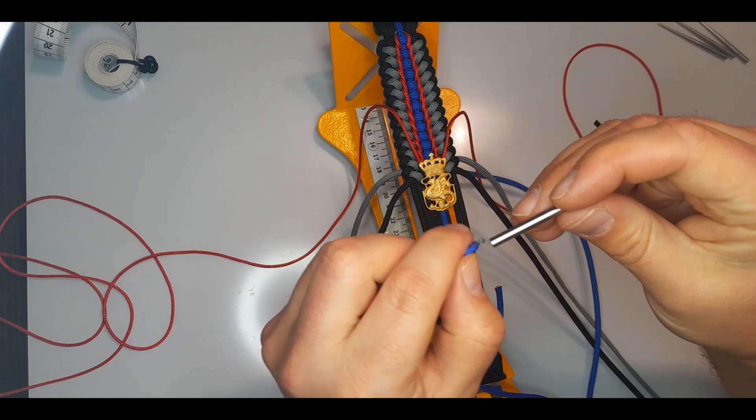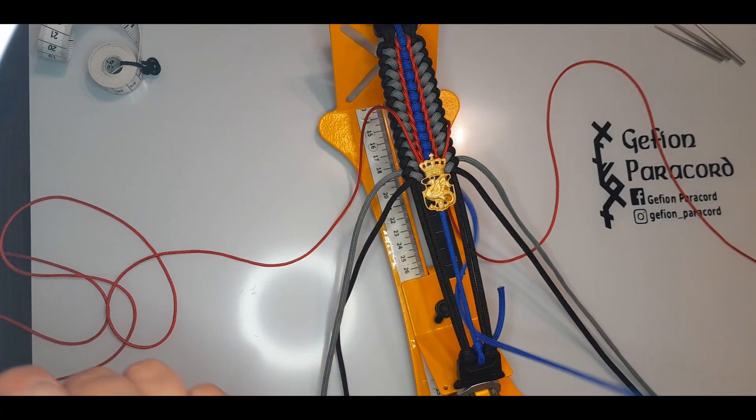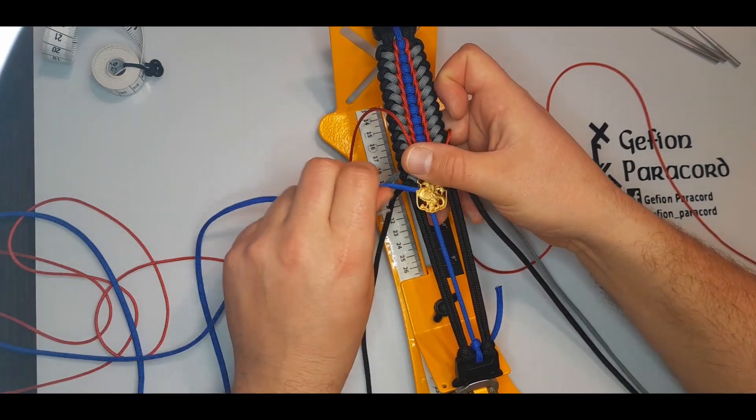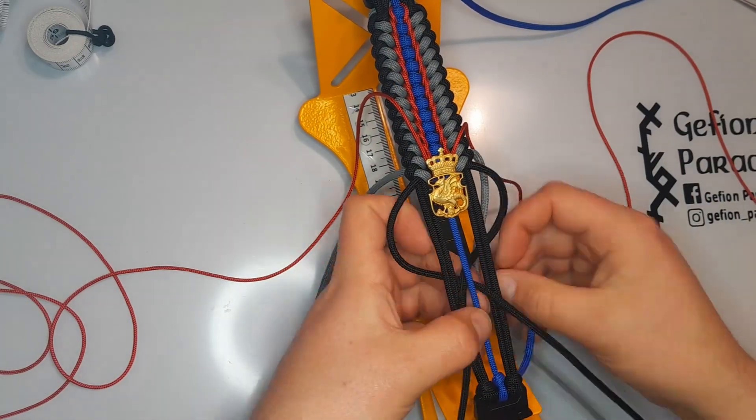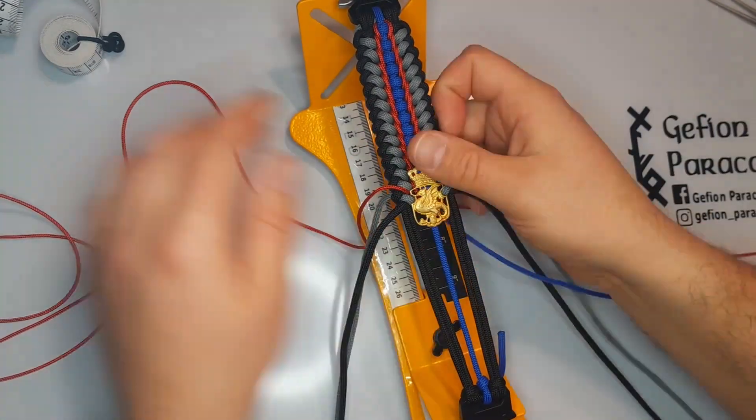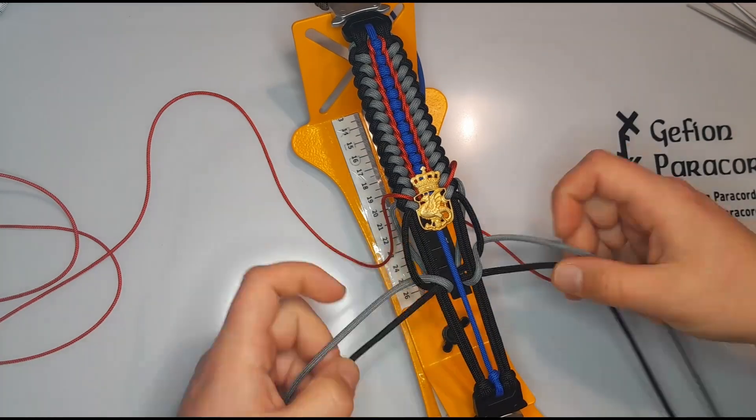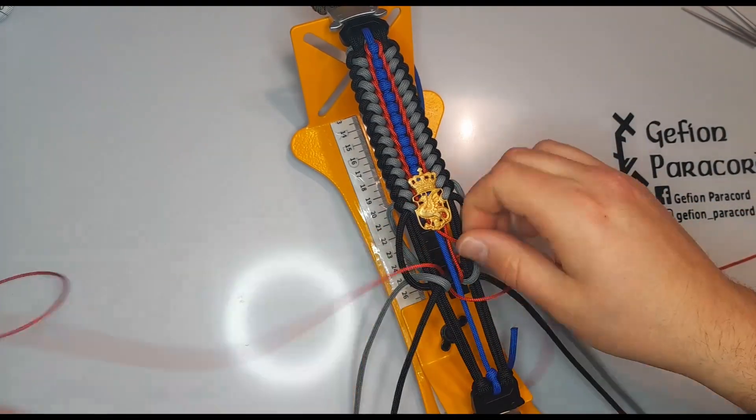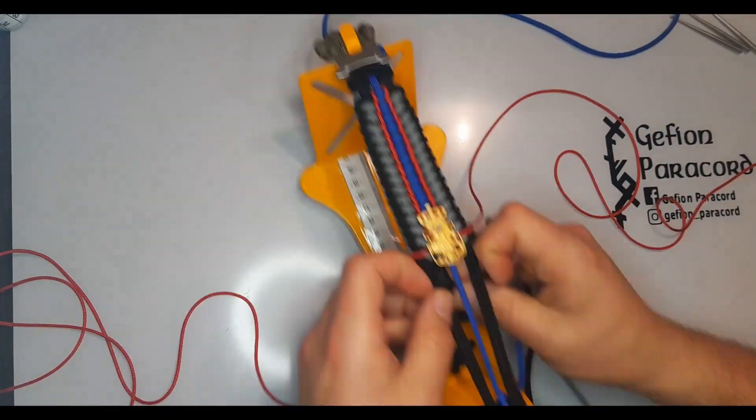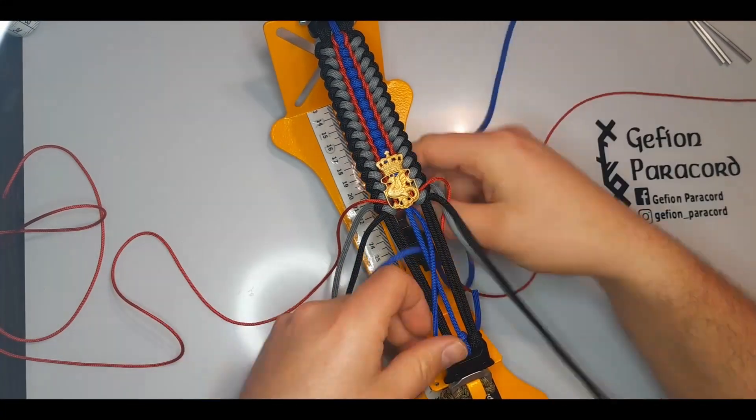So we'll introduce the center strand into one of the paracord needles just to make it a lot easier on the back side. Continuing the process from before. But now there's an emblem over it, so that's why it's a bit harder. So I guess you kinda caught the technique by now. Therefore I'm gonna skip to around the end.